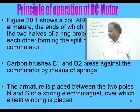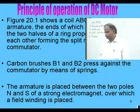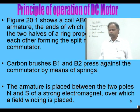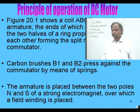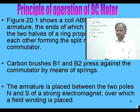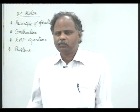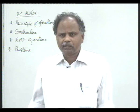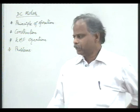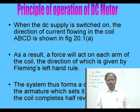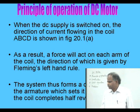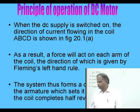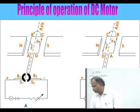The armature is placed between the north and south poles of a strong electromagnet over which a field winding is placed. When current passes through the field winding, the electromagnet becomes magnetized. When the DC supply is switched on — connecting a DC battery through a key to the coil ABCD — the direction of current flowing in the coil is as shown in figure 20.20, flowing from the positive terminal through S1 through ABCD and back through S2 to the negative terminal.